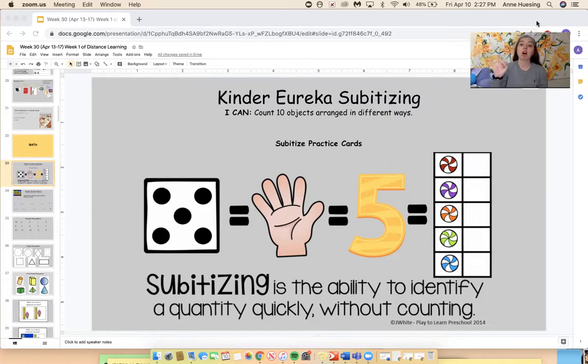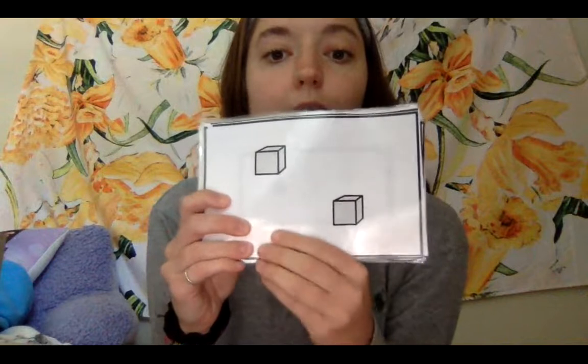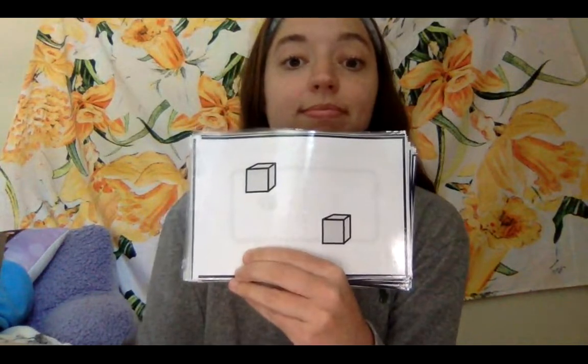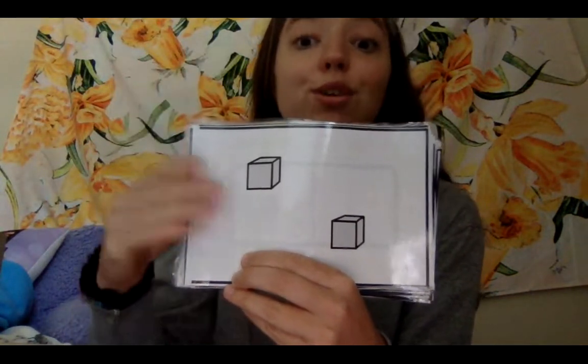Remember, when I show you the number, I want you to put it up on your fingers. Even though Ms. Yousing can't see you, I want to pretend like I'm seeing you put up the right number. That way we can all shout it out together, just like we do in class. Make sure you put it on your fingers first, then we'll shout it out together. Here's the first one.